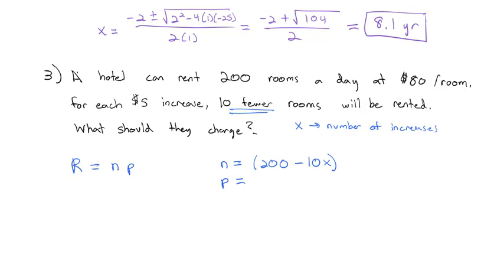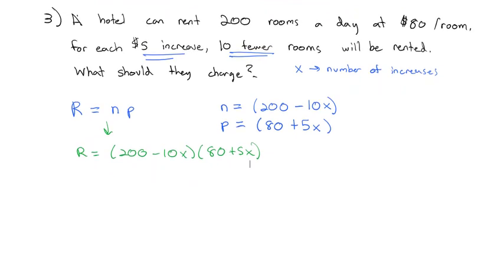And at what price am I renting them? Well, initially we're renting them at $80 a room, but we're going to increase in sets of 5. So we're going to increase $5 for every one of those price increases. Plugging that into the revenue equation then, the number is 200 minus 10x. The price is 80 plus 5x. And we now have a function that we can use to maximize our revenue.